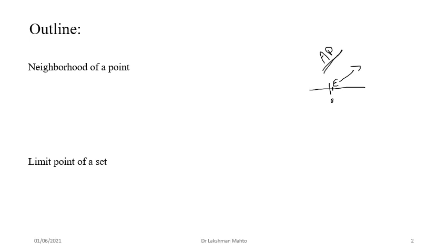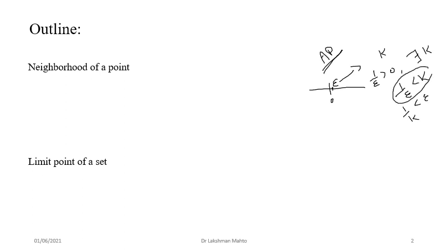With respect to this epsilon, we always use the Archimedean property — I'll write it as AP. It is a very essential property. With a given epsilon greater than zero, we try to come up with a natural number k. Since epsilon is a real number, one by epsilon is also a real number, and hence we can always find k such that one by epsilon is less than k, or equivalently, one by k is less than epsilon. Both are equivalent.